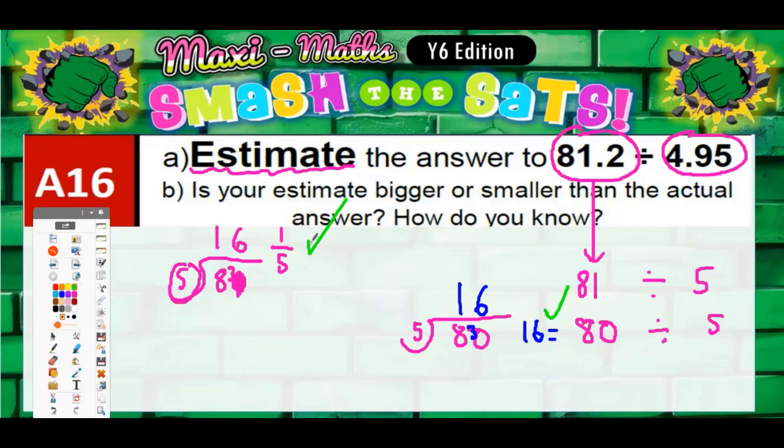But you must must must show the values that you are rounding to. Show the rounded values. You must do that because if you get an answer that they won't accept, you could still get one mark for showing your rounded values. They'll give you some credit for sharing those values.